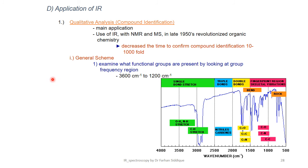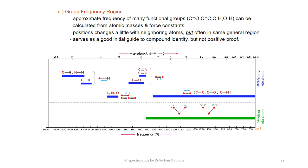There are different applications of IR spectrum. Qualitative and general qualitative analysis have main application in use of infrared and NMR MS. This decreases the time to confirm compound identification up to thousand-fold. We can know the group frequency regions and how many functional groups are present containing C=O, C=C, C-H, O-H.